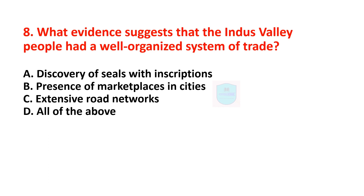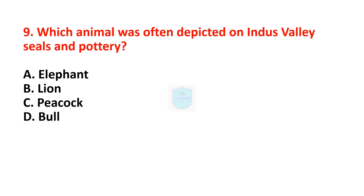Next question: what evidence suggests that the Indus Valley people had a well-organized system of trade? Correct answer is: discovery of seals with inscriptions, presence of marketplaces in the cities, and extensive road networks. So option D — all of the above — is correct. These evidences suggest that the Indus Valley people had a well-organized system of trade.